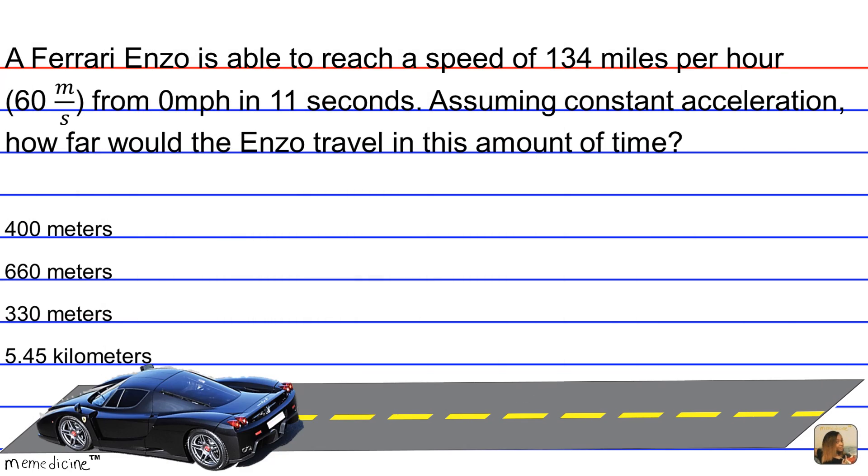To find our displacement with constant acceleration, we can use the kinematics formula d = Δt × v_a, where d represents displacement, Δt is the time that elapsed during which that displacement took place, and v_a is the average velocity during this time.